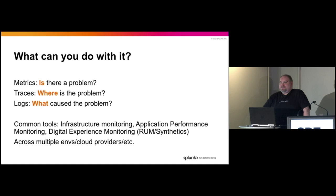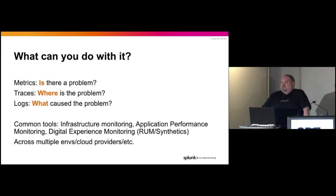What do you do with observability? You fix stuff. How do you do that? You use the three pillars — plus more, but for now the three pillars — to tell you if there's a problem. Is a metric wrong? Has a metric gone up or down? Use a metric to tell you something is broken. You use traces in modern, complicated microservice environments where everything talks to everything else, to figure out where is the problem — what service is having the issue. And then you use logs to tell you what caused the problem, what is actually broken, and how you can fix it.